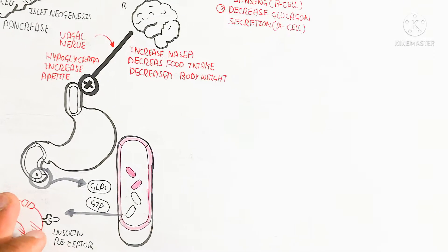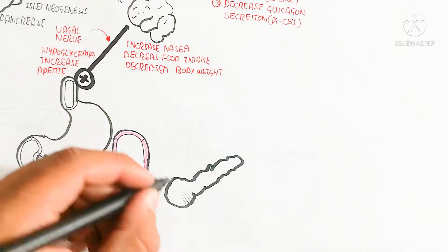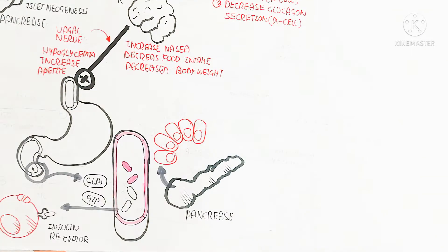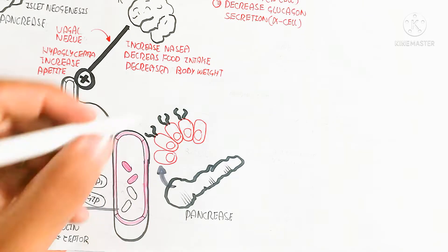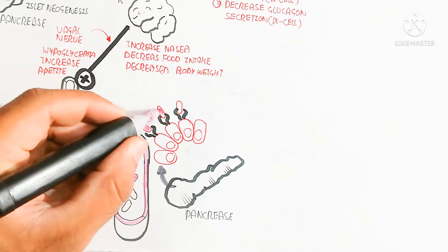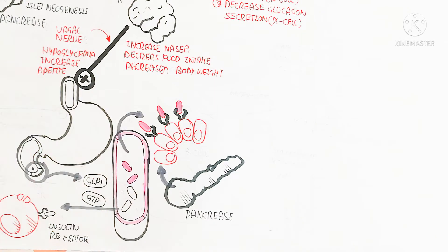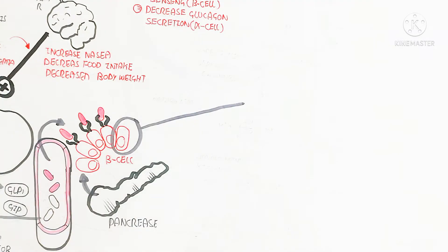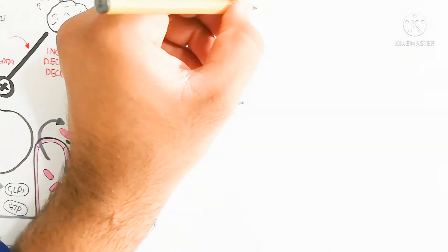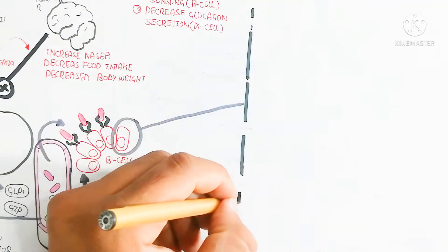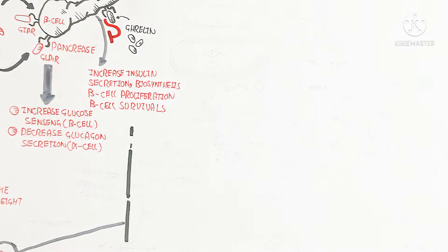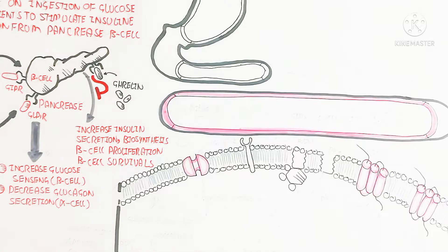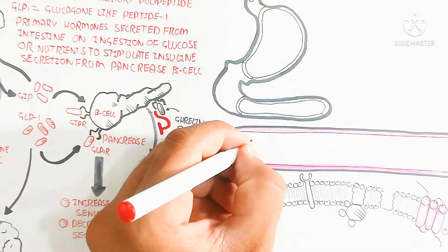When the beta cell binds with GLP-1 and GIP, let's understand the details of the cellular pathway and the mechanism of insulin secretion. This is the pancreatic beta cell binding with GLP-1 and GIP. I am drawing a larger picture to show the plasma membrane phospholipid bilayer. Glucose, amino acids, and fatty acids — causing hyperglycemia, hyperaminoacidemia, and hyperlipidemia — increase in the blood circulatory system and require movement into several tissues for metabolism.